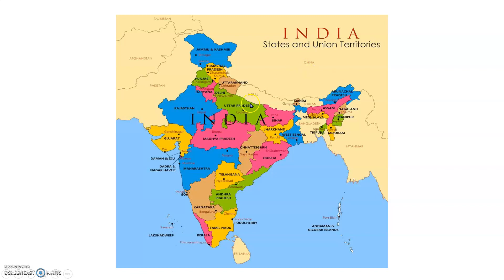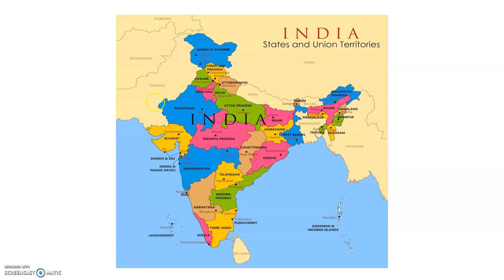This is our country India map. Here, Andaman and Nicobar Islands are there — we discussed them in the previous video. Another group of islands, Lakshadweep Islands, are also there in our country. Now, we are going to discuss Rajasthan. This is the state of Rajasthan. The capital city of Rajasthan is Jaipur. In our country, one desert is there — the Thar Desert — and it is located in Rajasthan state.